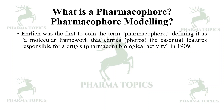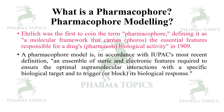Ehrlich was the first to coin the term pharmacophore, defining it as a molecular framework that carries the essential features responsible for a drug's biological activity, in the 19th century. A pharmacophore model, in accordance with IUPAC's most recent definition, is an ensemble of steric and electronic features required to ensure optimal supramolecular interactions with a specific biological target and to trigger or block its biological response.